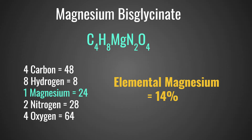This next form is non-buffered magnesium bisglycinate, which is the form we generally recommend and carry. Its formula is C4H8MgN2O4 — pretty complicated, and you can see magnesium is only one component of all that. Adding up all the atomic weights: four carbons is 48, eight hydrogens is 8, one magnesium is 24, and so on. When you add it all up and divide, the elemental magnesium is only 14 percent of that compound.